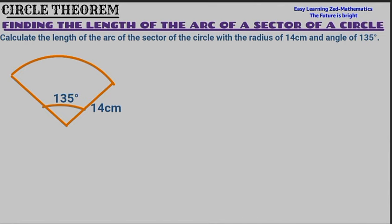That statement is illustrated in this diagram. As you can see, that is the sector of the circle which has 135 degrees inside the sector, and it has got the radius of 14 centimetres on each side. We are supposed to find the length of the arc in this sector.